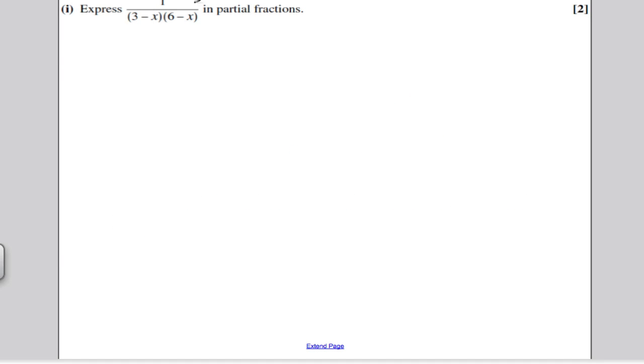It starts off by asking us to express 1 over (3-x)(6-x) in partial fractions. Now I'll show you the proper long way and I'll show you a quick way afterwards. You want to write 1 over (3-x)(6-x) in the following form. Well, there are two distinct linear factors on the bottom.